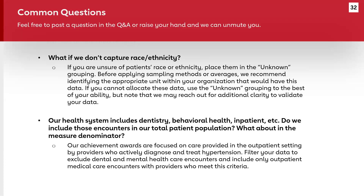If you do not capture race and ethnicity, you can place those patients in the unknown grouping. Before applying an average — for example, assuming this year's racial breakdown matches last year's — we consider that a last resort. We recommend attempting to identify someone within your organization who might have more up-to-date data. If you can't, you can use the unknown grouping to the best of your ability, lumping everybody into unknown if need be.